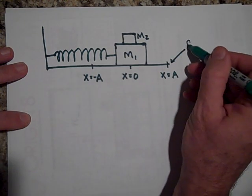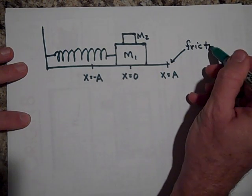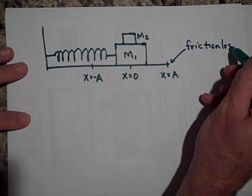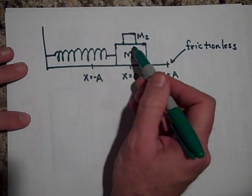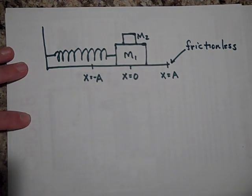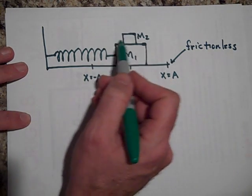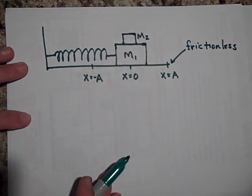While this is frictionless, we will need friction to be present between these two surfaces so that this box can oscillate back and forth in simple harmonic motion as well.